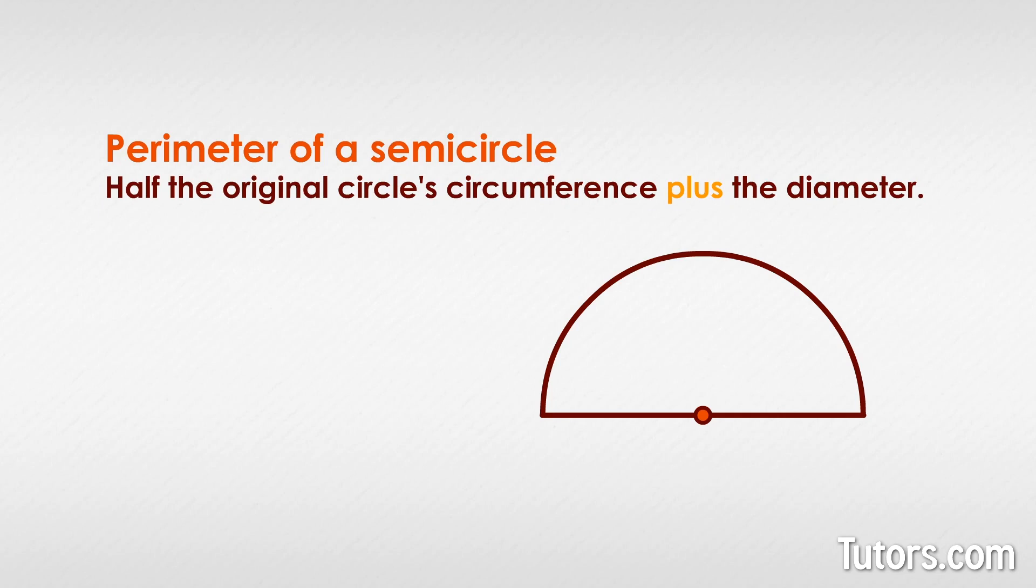Recall that the formula for the perimeter or circumference of a circle is C equals 2πr or C equals πd. To find the perimeter of a semicircle, you need half of the circle's circumference plus the semicircle's diameter: P equals one-half times 2πr plus d. The one-half and two cancel each other out. You simplify and get P equals πr plus d.